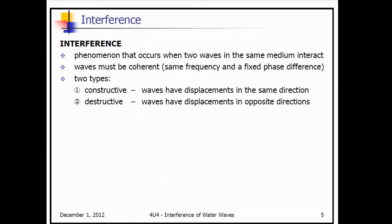So copy this down for interference: it's a phenomenon that occurs when two waves in the same medium interact. The waves must be coherent, meaning they have the same frequency and a fixed phase difference — that phase difference doesn't change with time. We have constructive and destructive interference as well.